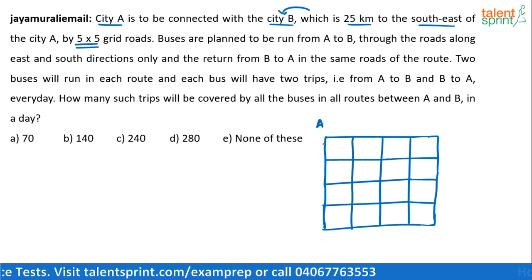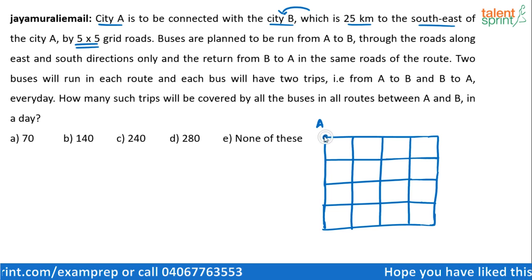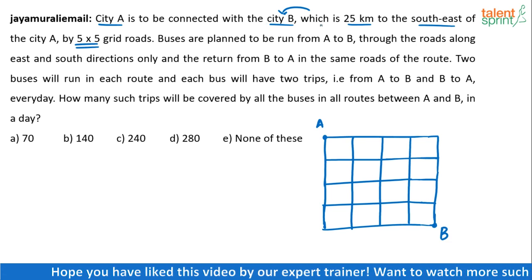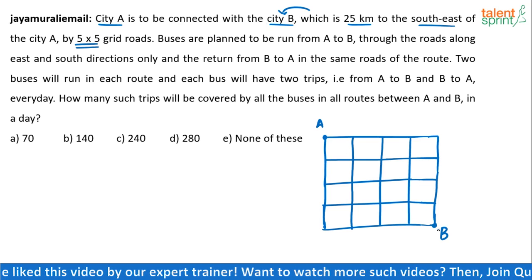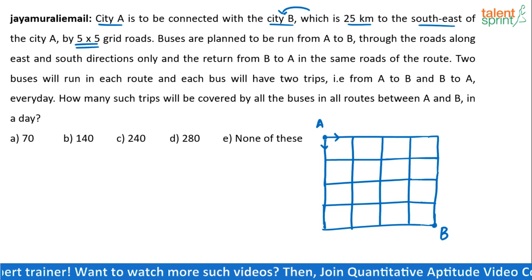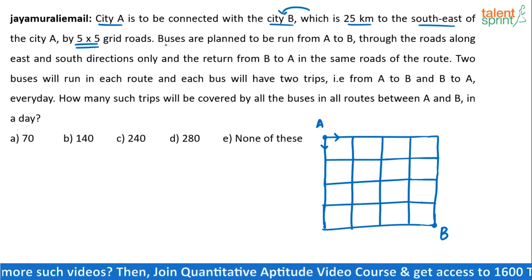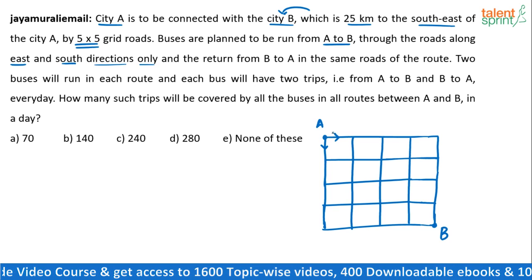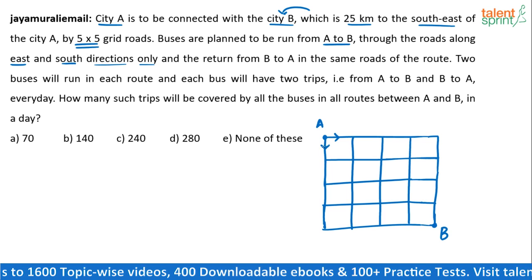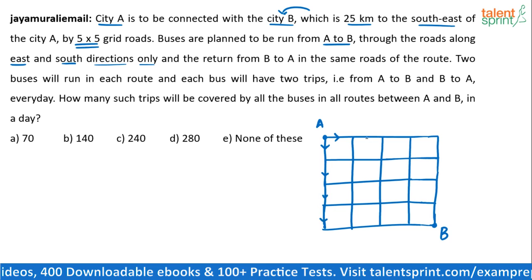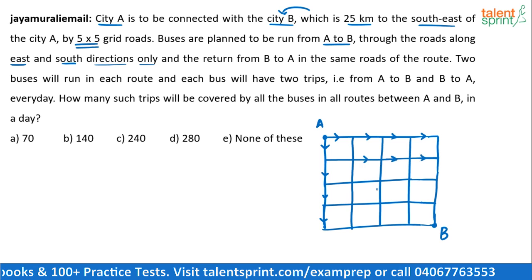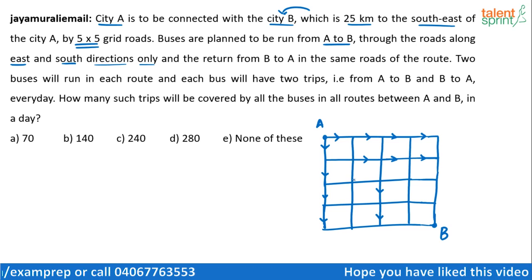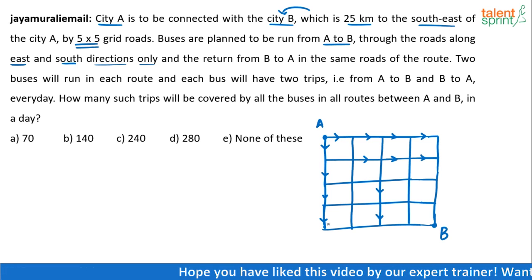So this is the five-by-five grid we have between the two cities. One, two, three, four, five vertical roads and one, two, three, four, five horizontal roads. This point is City A and this point is City B. City B is in the southeast direction — east of A, south of A, and anything in between is southeast. Buses going from A to B can travel only southwards or eastwards. A bus cannot go northwards or westwards — it should go only southwards or eastwards.